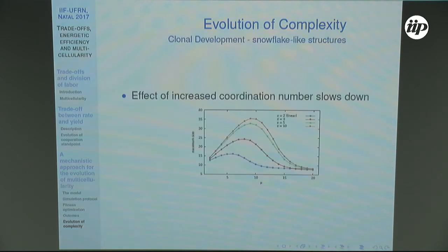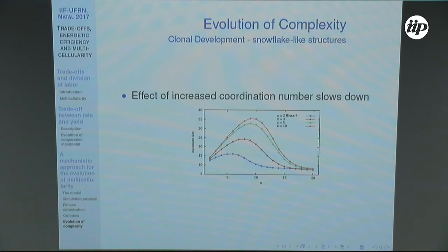We also evaluated the coordination number of the snowflake structure to see if increasing coordination number approaches the compact spherical structure. This is not fully the case — the rate of increase of maximum size slows down as the coordination number increases and tends to saturate.